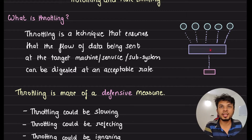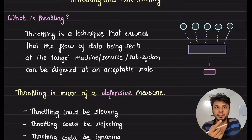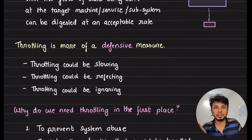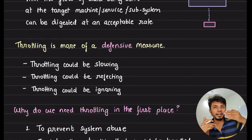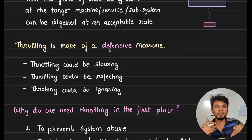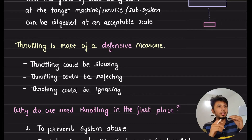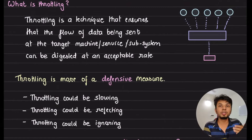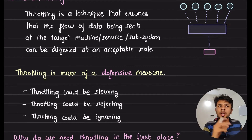A component called a rate limiter kicks in, which ensures that data is forwarded to the target system at an acceptable rate. Throttling is generally perceived as a defensive measure — you are being defensive to prevent your system from going down. There are three typical strategies for what your throttling mechanism or rate limiter would do when too many requests arrive.